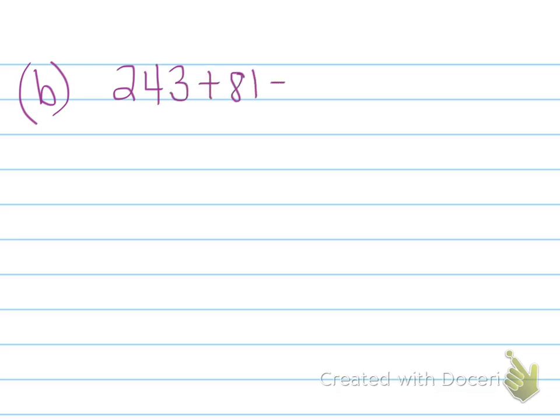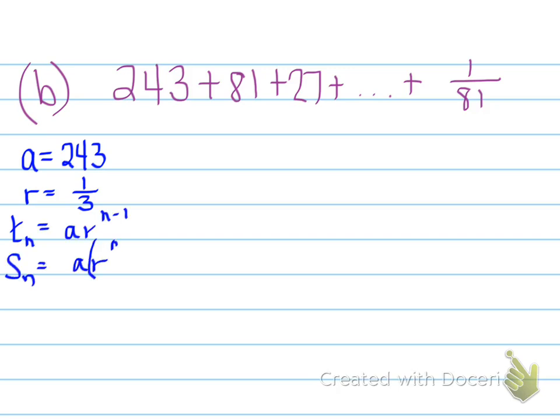Example B, we have a series right here where we have to add all the values, and it turns out our last number is 1 over 81. Well, that means there must be a common ratio. a is equal to 243, r is equal to 1/3, and you're using the Tn formula to find the nth value. What is, what position is 1 over 81? And then once we find out what position it is in, we can find the sum of that position number terms.